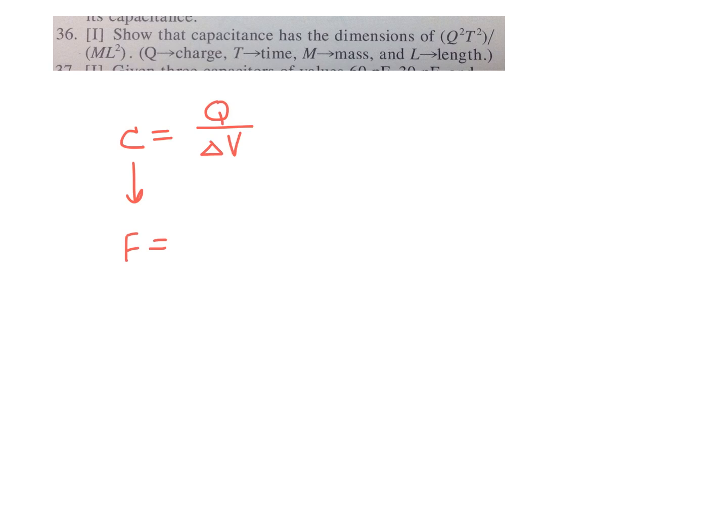Q, charge, is in coulombs, so capital C there means coulombs, and voltages, potential differences in volts. So, this second equation that I have is not really an equation, it's the units that go with the equation. Well anyways, I want to show that the right-hand side of this is equivalent to what they have at the top, Q squared T squared over ML squared.